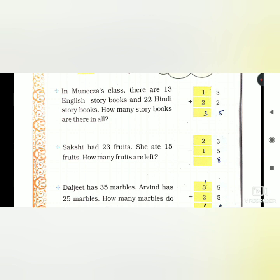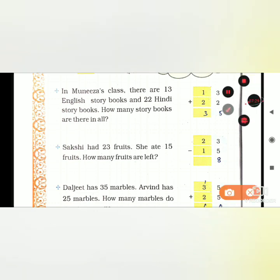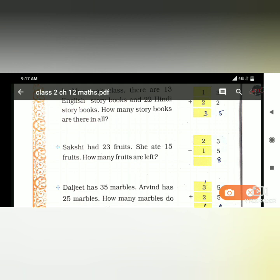Saksheep has 23 fruits, which have 15 fruits. Now if we need 23 fruits, we will subtract 15 fruits. We'll do 23 minus 15. 3 cannot subtract 5, so we open one bundle. We'll make it 13 and cross the 2, write 1. 13 minus 5 is 8, 1 minus 1 is 0, so answer is 8.